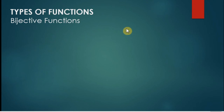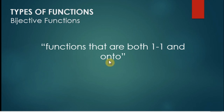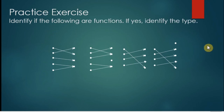The third type is called a bijective function. By definition, it is a function that is both one-to-one and onto. If a function is one-to-one and onto at the same time, then it is bijective.